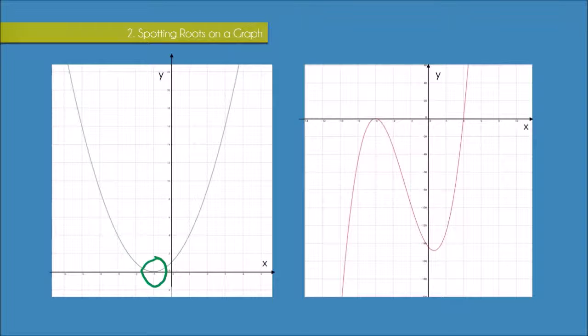Well that's true, so what we have here is something called a repeated root. So basically the root x equals minus one is used twice.